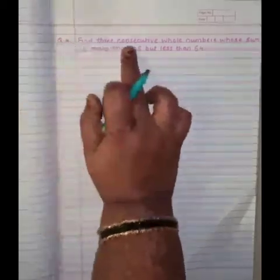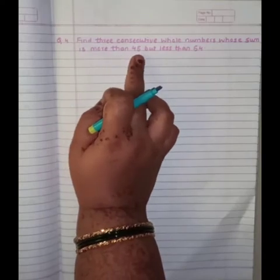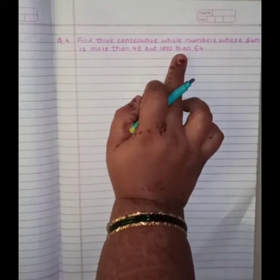Question No. 4: Find 3 consecutive whole numbers whose sum is more than 45 but less than 54.